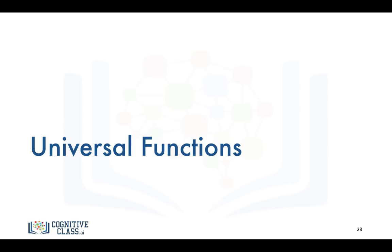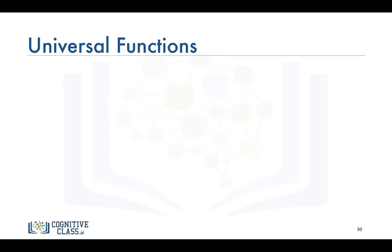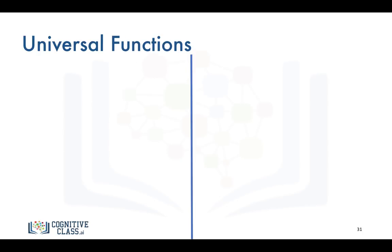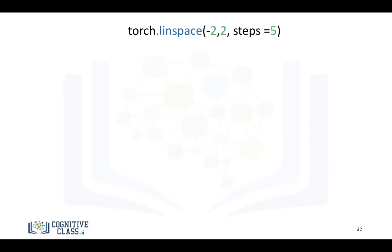Finally, let's go over some universal functions. We can apply basic operations to a tensor — for example, we can calculate the mean of a tensor, which is basically the average, and we can find the maximum element, in this case 5. We can use numpy.pi to create an element pi, create a torch tensor, and then apply the sine function to every element in the tensor and assign it to y.